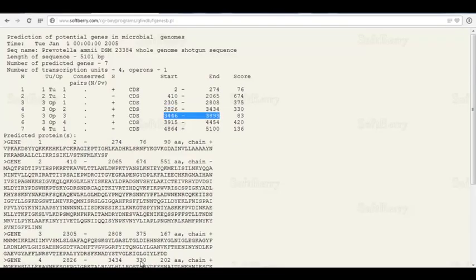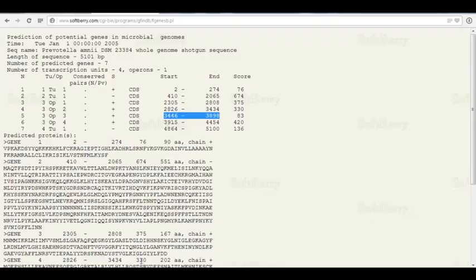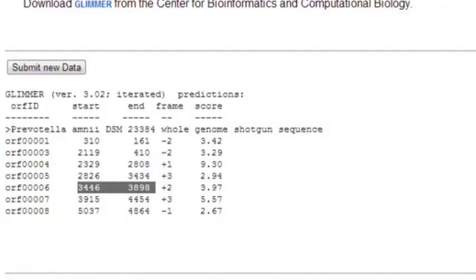3446 to 3898, exactly the same. And 3915 to 4454, exactly the same. So there's some overlap in the predictions.